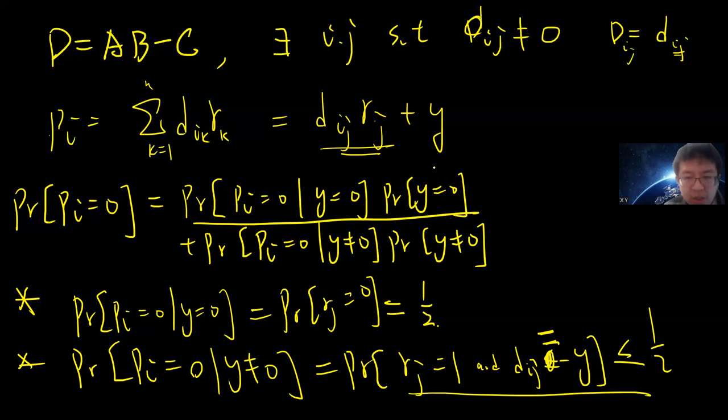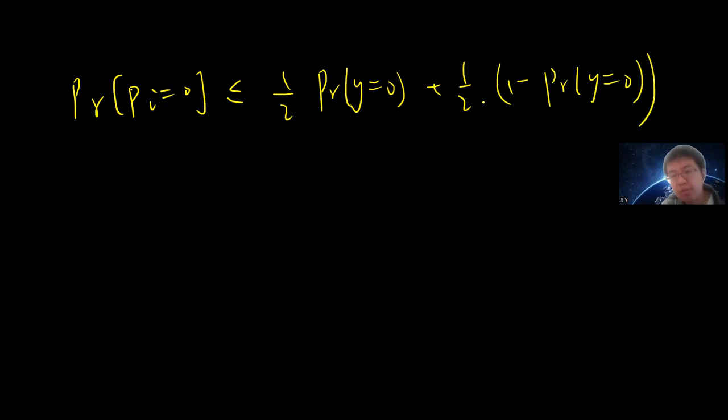So combine these two. You can prove that probability of P_i equals 0 is less or equal to half times probability Y equals 0, plus half times 1 minus probability Y equals 0. Because probability is either 0 or non-zero. So this is less than or equal to half.